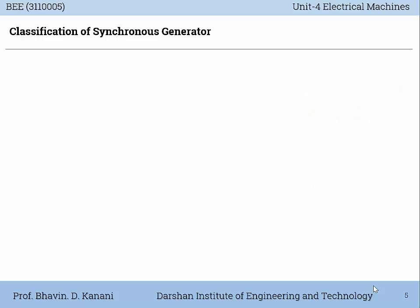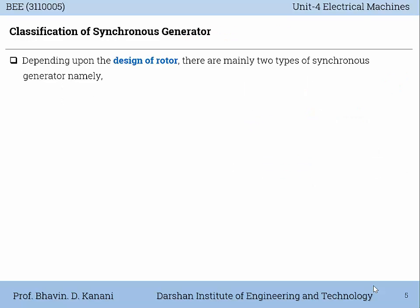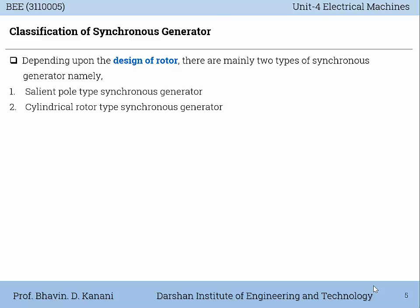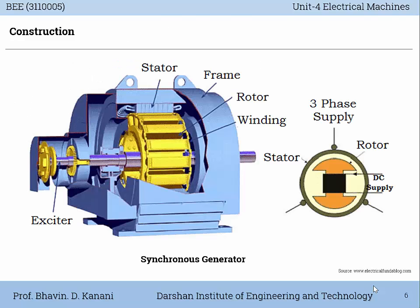Classification: depending upon the design of the rotor, there are mainly two types of synchronous generator — namely, salient pole type synchronous generator and cylindrical rotor type synchronous generator. The construction is very well explained by this diagram.